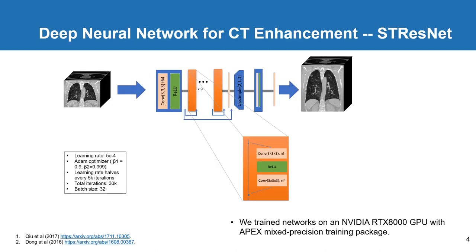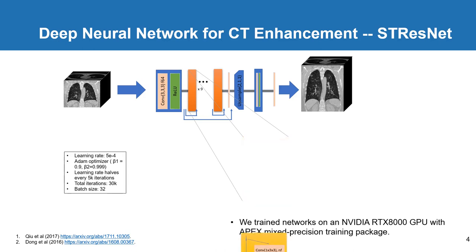Here is a breakdown of the baseline SR ResNet. It has a series of residual blocks with convolution and activation layers. As illustrated earlier, the 3D convolution blocks are replaced with spatial and temporal convolution blocks. We trained the network on an NVIDIA RTX 8000 GPU and also used the APEX Mixed Precision Training package to further improve the training speed.